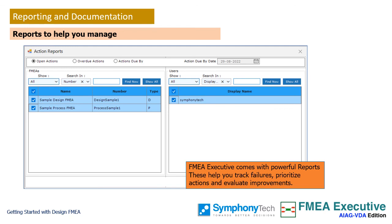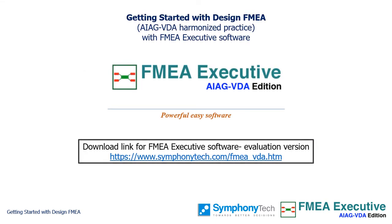FMEA can be expressed in the familiar spreadsheet form with a click of a button. FMEA executive software is powerful yet easy to work with. Explore the simple features that enable an anxiety-free implementation of FMEA and take your FMEA initiative beyond mere documentation. FMEA executive addresses both design and process FMEAs. An evaluation version of FMEA executive is available for download and tryout. Download link is provided in the narration of this video.